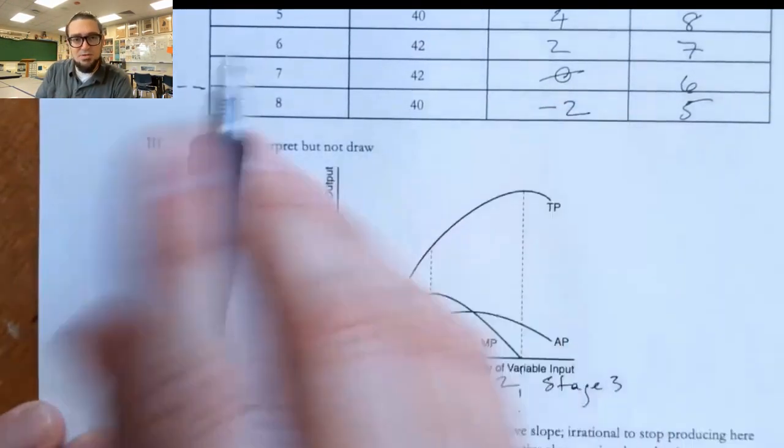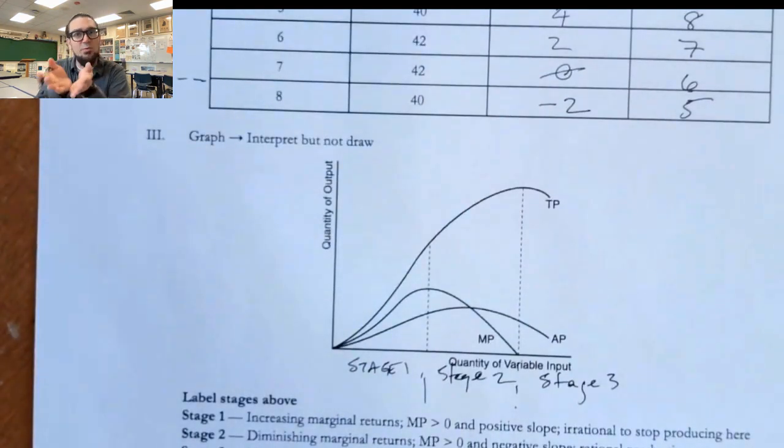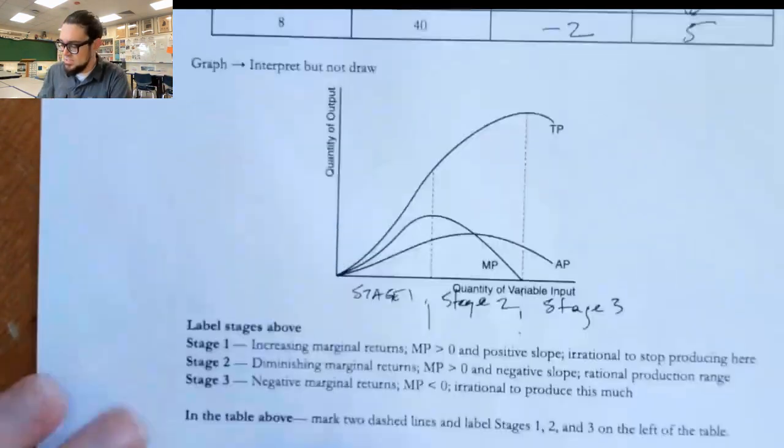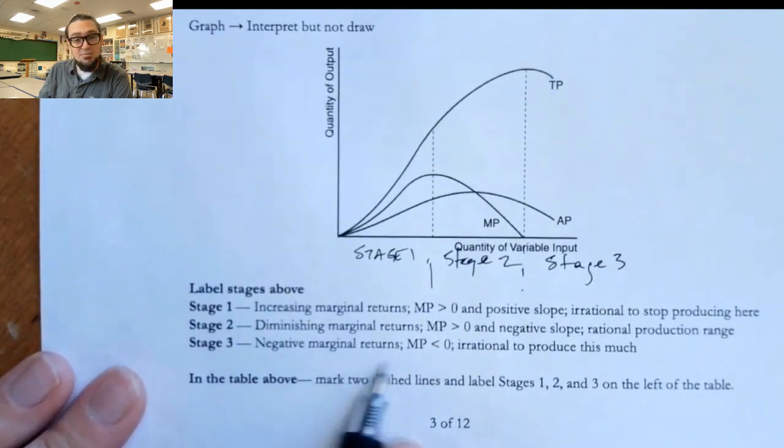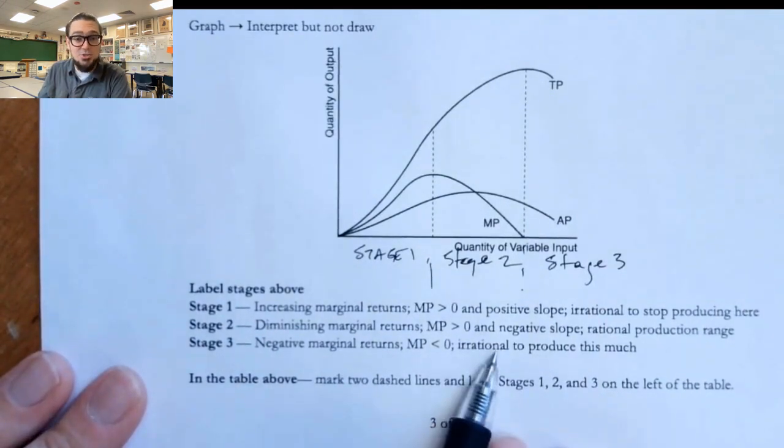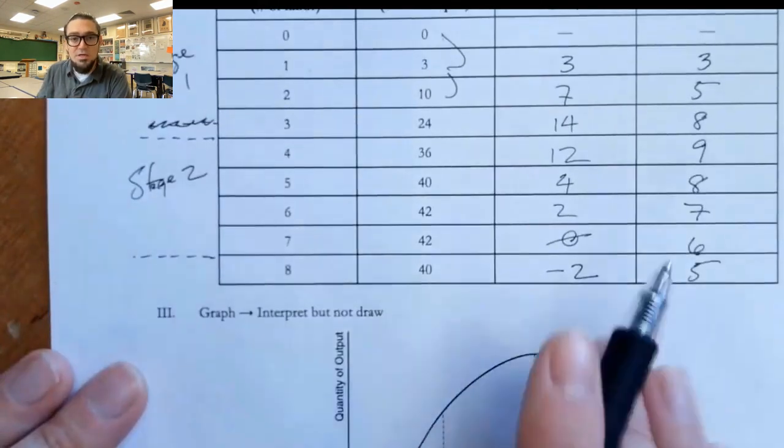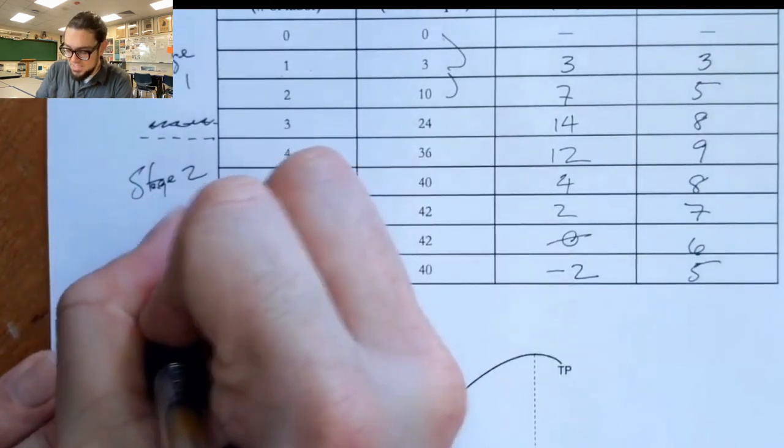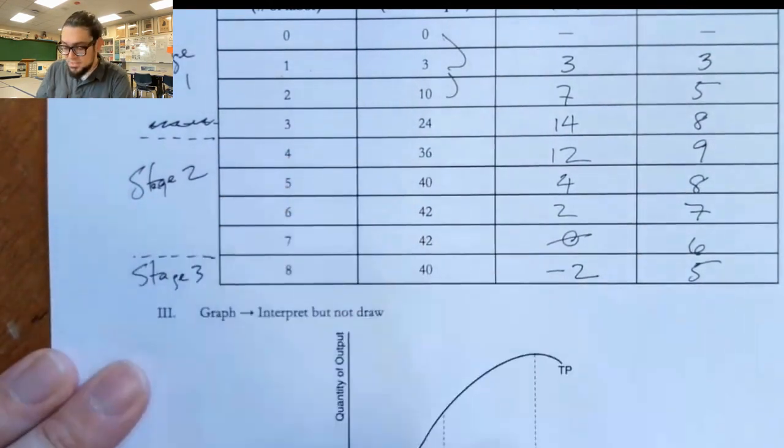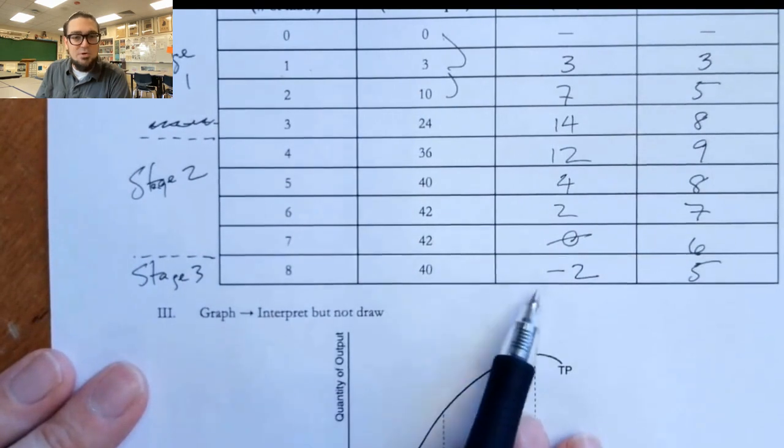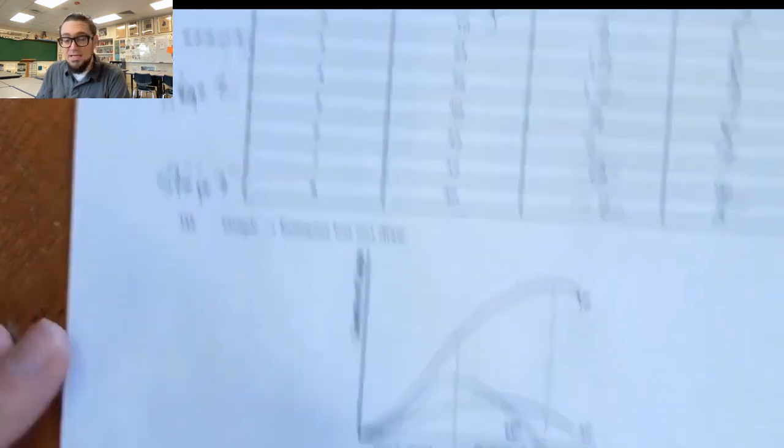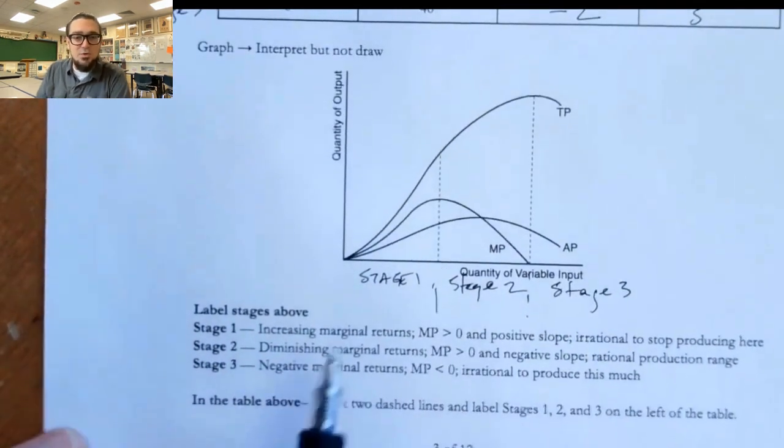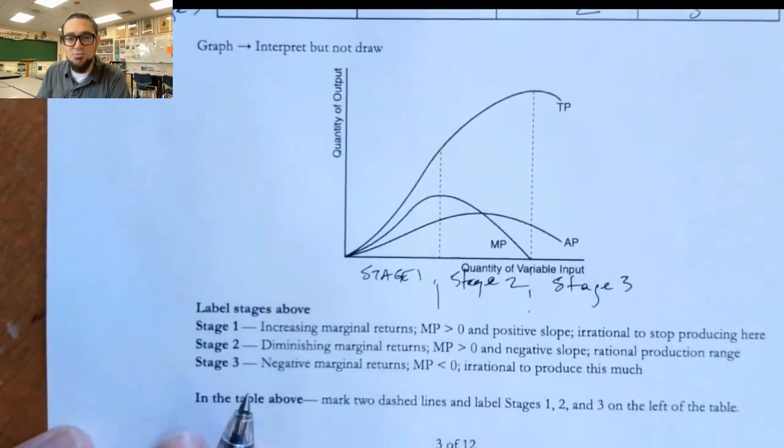And it's because this is zero, it's kind of like a point where they're kind of splitting between the two stages. That third stage, negative marginal returns, it would actually be irrational to ever hire that worker. It doesn't ever make sense to hire this eighth worker. Stage three, because the eighth worker is actually costing us units of output. And that's not where you would ever want to be in terms of these production ranges.